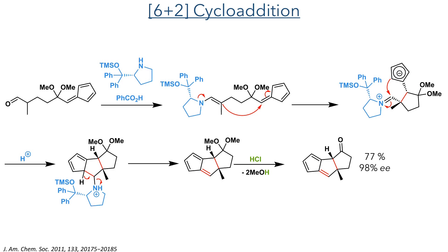The enamine undergoes an intramolecular addition into the alkene, forming an intermediate with a cyclopentadienyl anion. This then attacks the iminium intermediate, forming another carbon-carbon bond to complete a five-membered ring. The pyrrolidine can then be protonated and eliminated, forming a new alkene in conjugation with the other double bonds present. Hydrochloric acid is then added, and this hydrolyzes the acetal to form the tricyclic ketone.